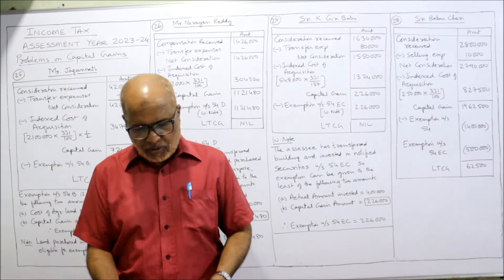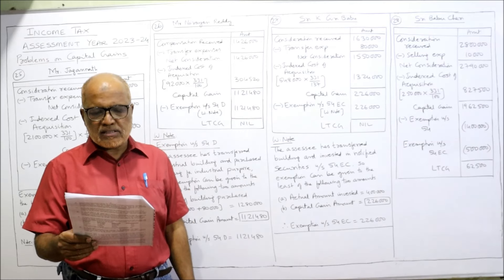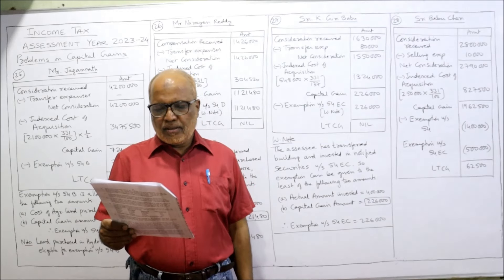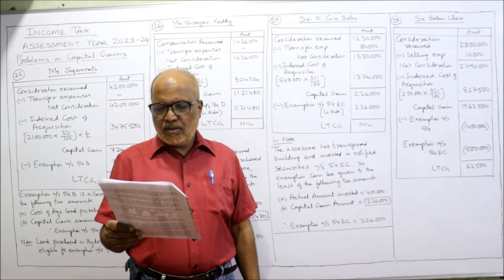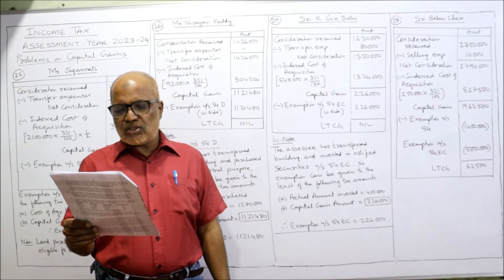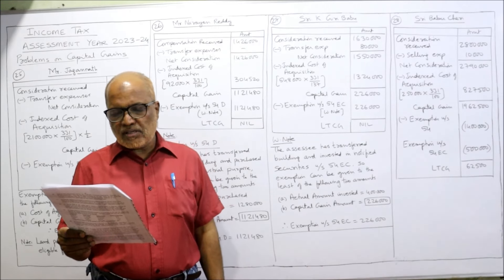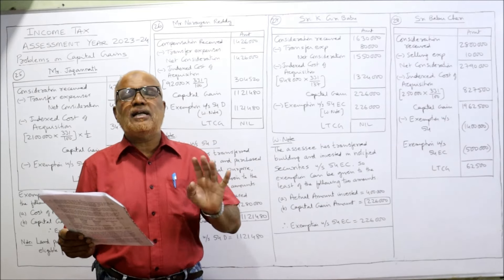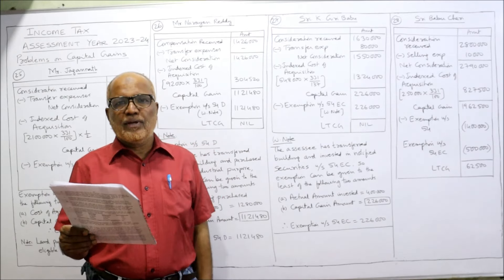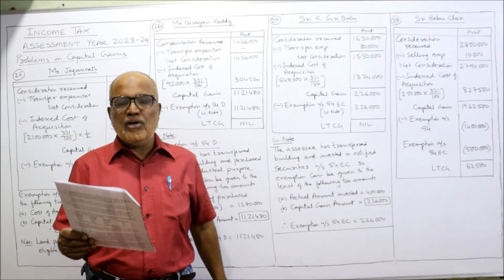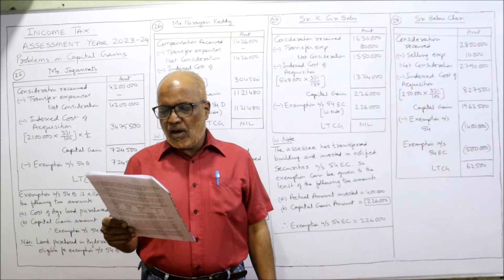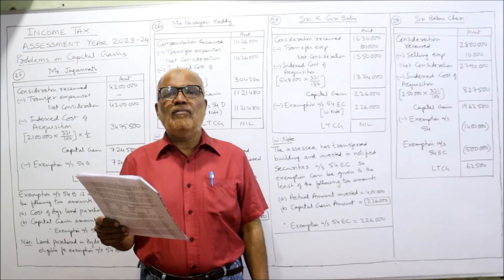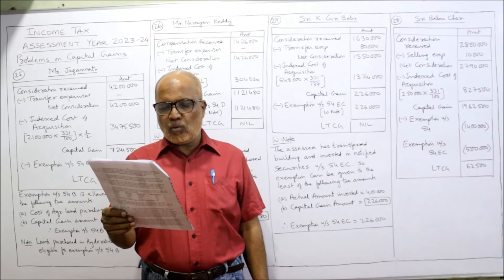Next, the 27th problem. During the previous year, CK Giri Babu sold his building situated in Bangalore for 16,30,000. The cost of the building was 5,00,000 eleven years ago. Registration expenses incurred: 40,000 and brokerage paid to purchase: 8,000. The cost of acquisition includes the actual cost and all incidental expenses, so these incidental expenses will also be added. Total cost of acquisition: 5,00,000 + 40,000 + 8,000 = 5,48,000. After selling the building, within 3 months he invested 4,00,000 in NABARD — National Bank for Agriculture and Rural Development — which has been notified as specified security under section 54EC.